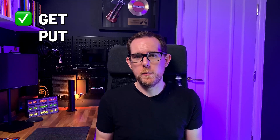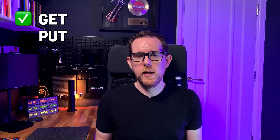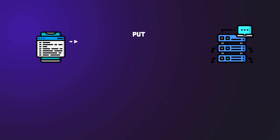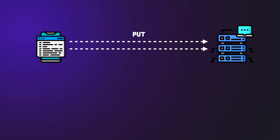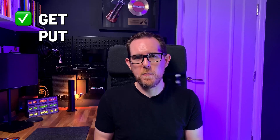With a PUT request, we're going to be performing updates. So let's say we're updating a user's email address. No matter how many times we call this method, we should always get the same response, and the user's details are always going to get updated to the same thing. So a PUT request is always idempotent as well.